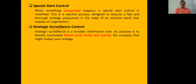The next type is called strategic surveillance control. Strategic surveillance control is a monitoring control which includes not only controlling the internal environment but also controlling the external or outside environment of the company.